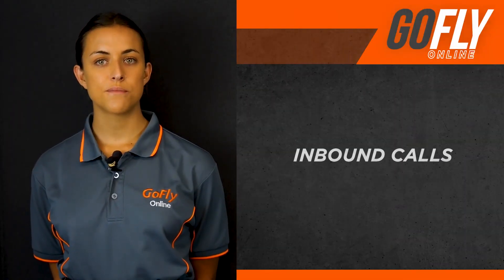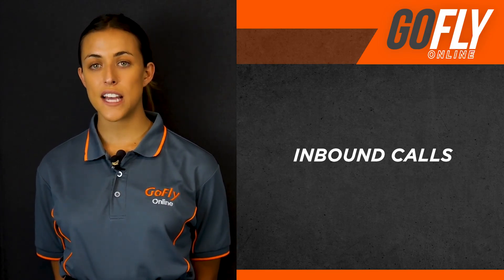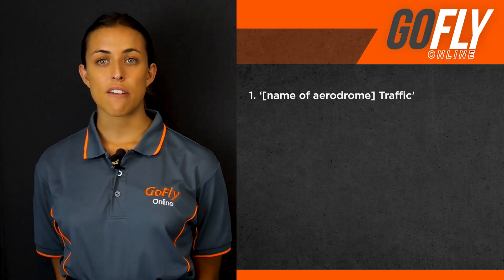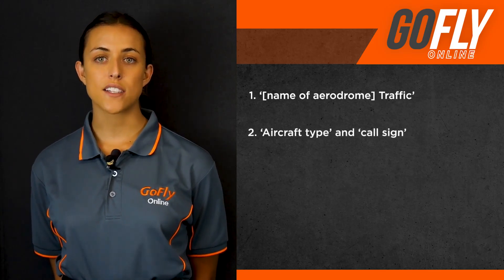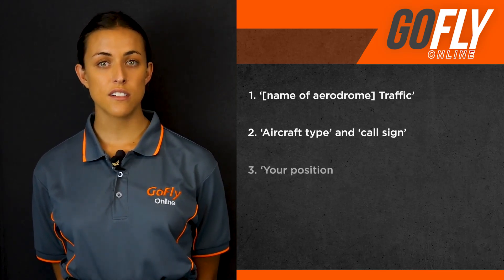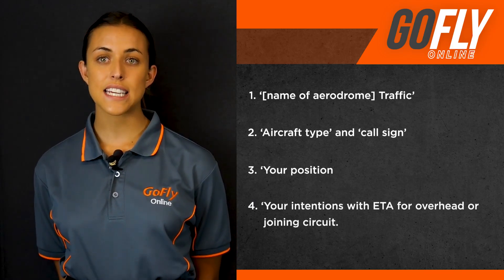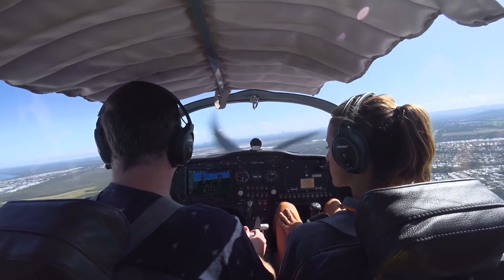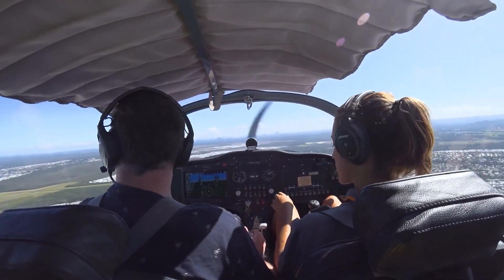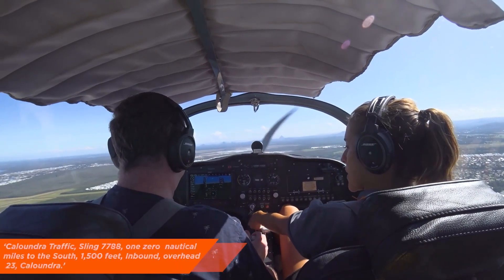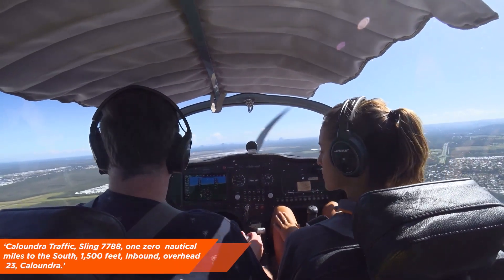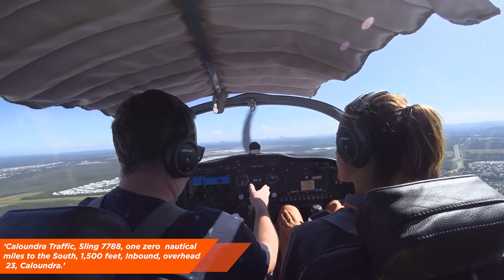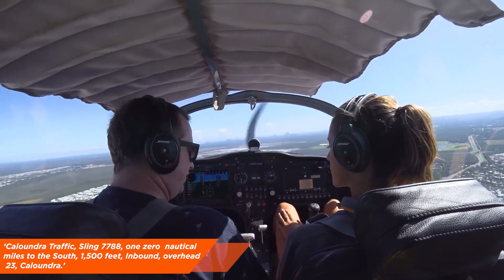Inbound calls. When inbound to a CTAF, the format is fairly simple. It includes the name of the aerodrome, followed by traffic, aircraft type and call sign, your position, your intentions with an ETA for overhead or joining the circuit, and the name of the aerodrome. An example of an inbound call to a CTAF would be: Caloundra traffic, Sling 7788, is 10 nautical miles to the south, 1,500 feet, inbound, overhead 23, Caloundra.